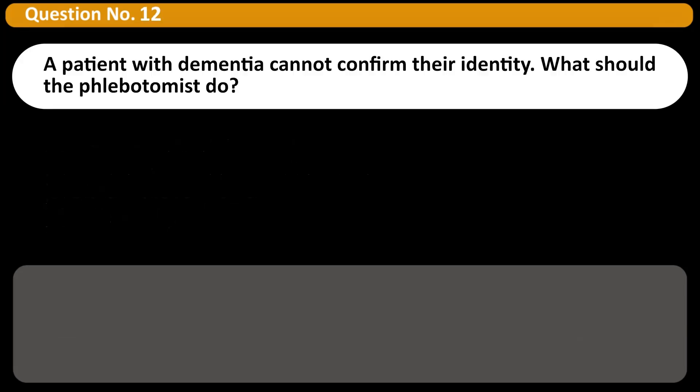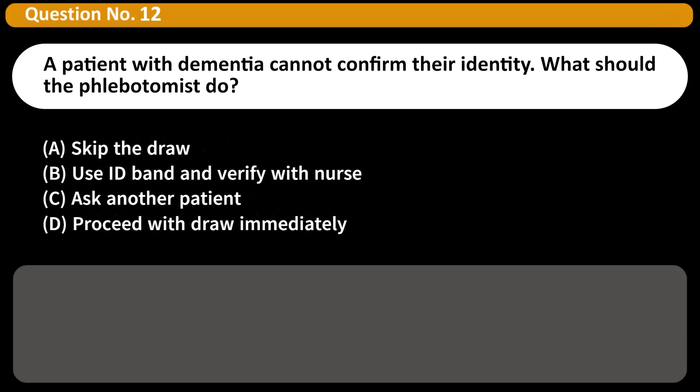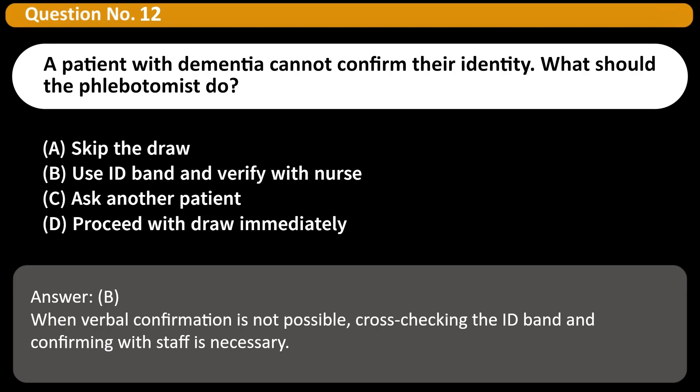A patient with dementia cannot confirm their identity. What should the phlebotomist do? A. Skip the draw. B. Use ID band and verify with nurse. C. Ask another patient. D. Proceed with draw immediately. Answer: B. When verbal confirmation is not possible, cross-checking the ID band and confirming with staff is necessary.